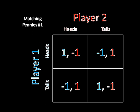We found that the equilibrium for this game is in mixed strategies, and it calls for both players to mix with probability one-half along both of their strategies. So player one mixes with heads one-half, tails one-half, and player two does the same.